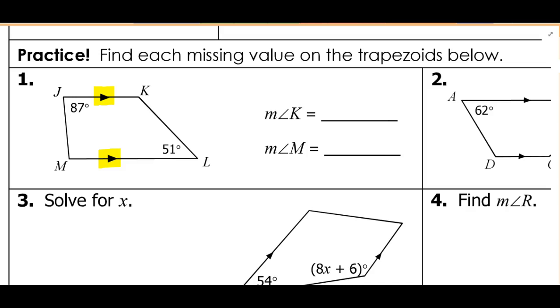I know that angle J and angle M are going to be supplementary. That's a pair of same side interior angles. So angle M is going to be 180 minus 87 or 93 degrees.